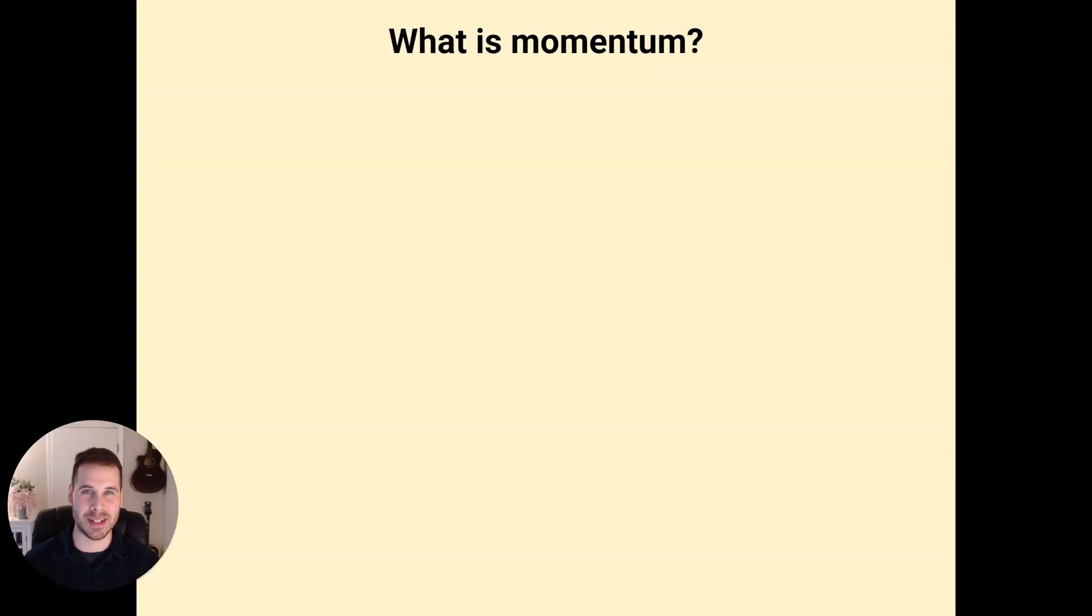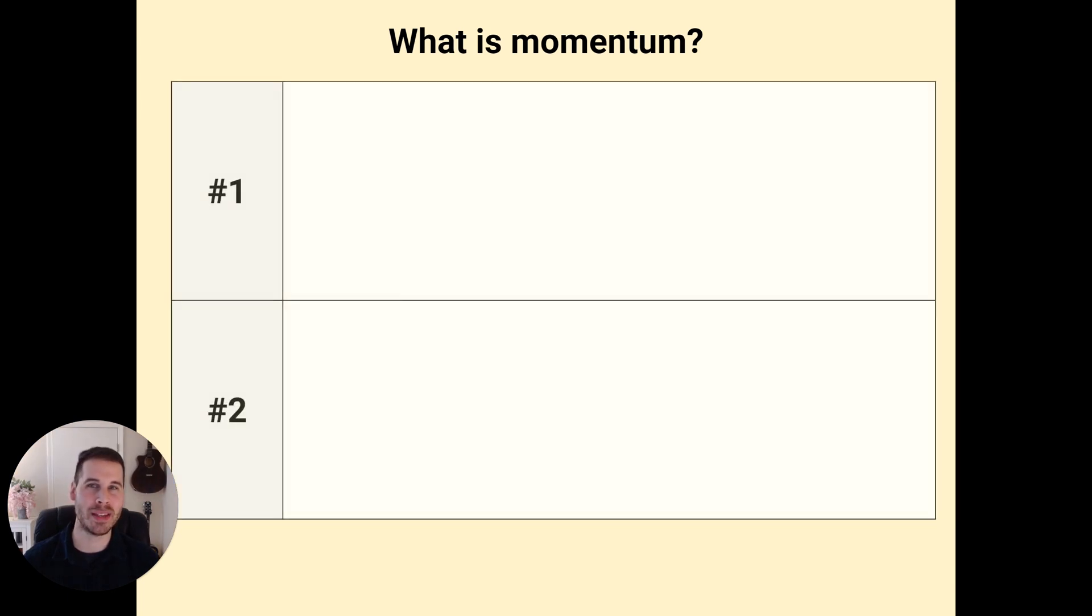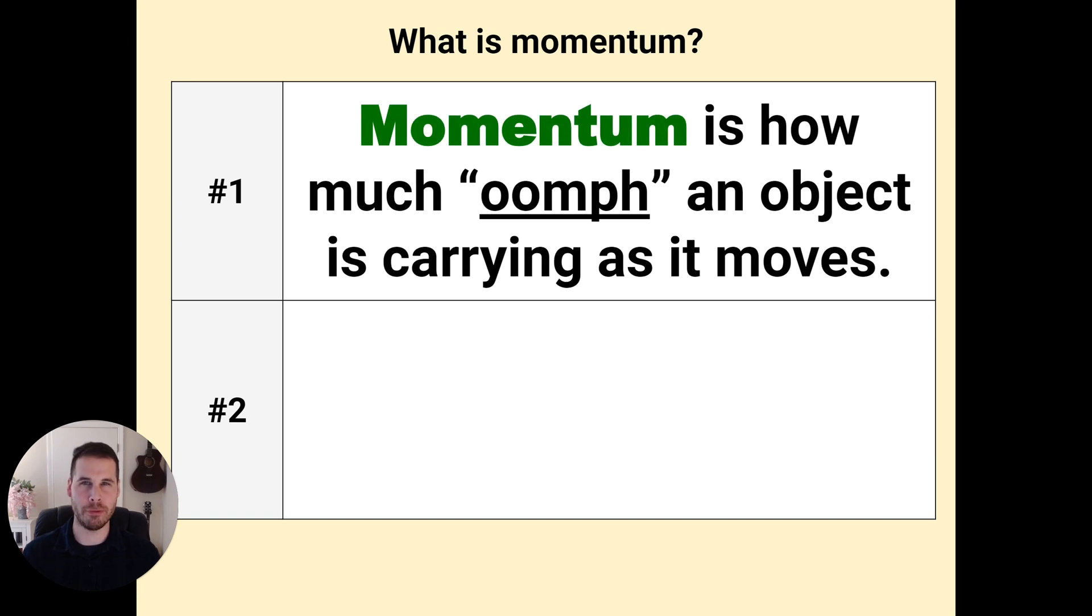So what is momentum? Rather than providing a textbook definition, I'm going to give you two ways to think about it. Momentum is how much oomph an object is carrying as it moves. Just intrinsically, you can know what I'm talking about here. If someone throws a very light object and you catch it, you're not going to feel a whole lot of oomph, but if someone tosses a really heavy object at you and you catch that, you feel a lot of oomph. Think about that feeling you get in your body when you catch something heavy, and you'll know exactly what momentum is.